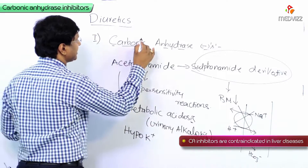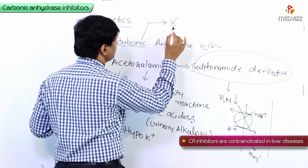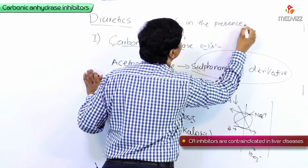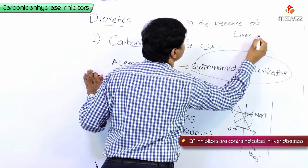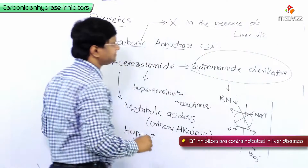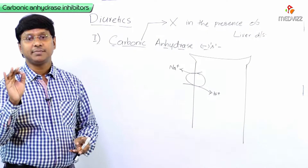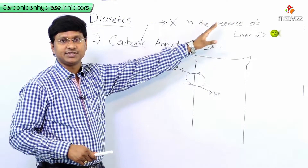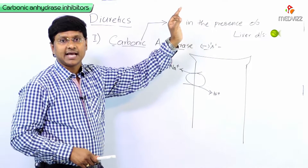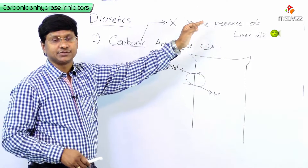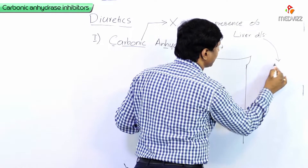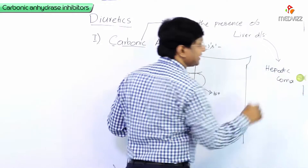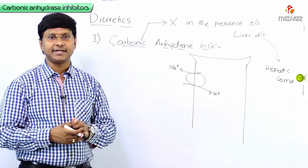Carbonic anhydrase inhibitors should not be used in the presence of liver disease. The question is why. Whenever an individual has liver disease, they will develop what is called hepatic coma. Why do they develop hepatic coma?